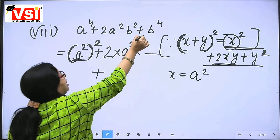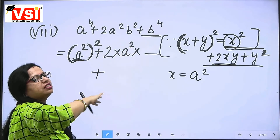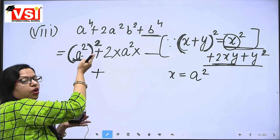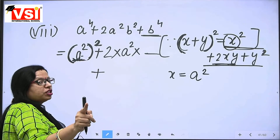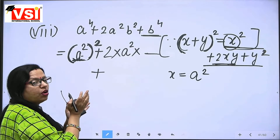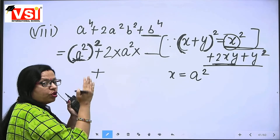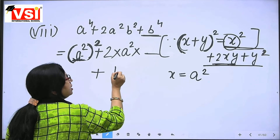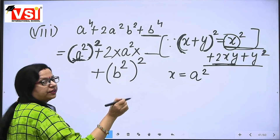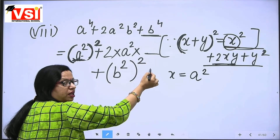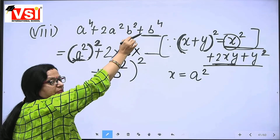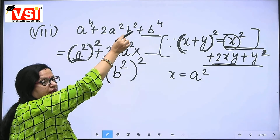Y square is needed. Now we have X done. B raised to the power 4 needs to be in whole square form. So how do we write it? B raised to the power 2, whole square of it. When you open this bracket, you get back B raised to the power 4. So that is how we write it in whole square form.